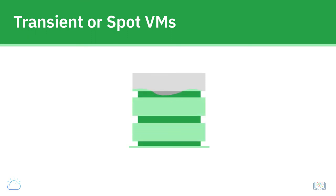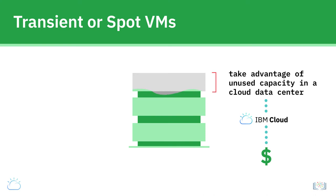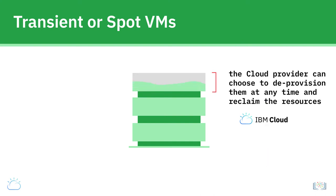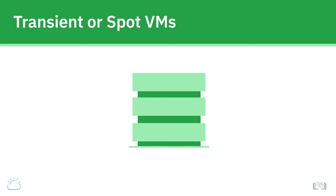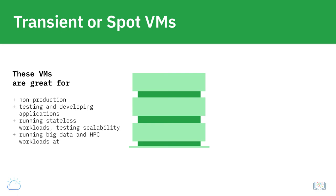Transient or spot VMs take advantage of unused capacity in a cloud data center. Cloud providers make this unused capacity available to users at a much lower cost than regular VMs of similar sizes. Although the transient VMs are available at a huge discount, the cloud provider can choose to deprovision them at any time and reclaim the resources. Because you run the risk of losing these VMs when capacity decreases, these VMs are great for non-production workloads such as testing and developing applications, running stateless workloads, testing scalability, or running big data and high-performance computing workloads at a low cost.